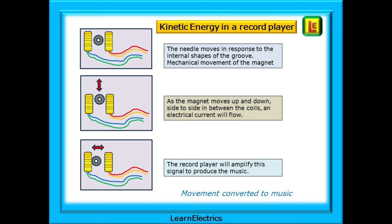The needle moves in response to the internal shapes of the groove. The lumps and bumps cause mechanical movement of the magnet. As the magnet moves up and down, side to side, in between the coils, an electrical current will flow that will mimic the frequency of the groove indentations. Bigger changes and more rapid changes in the groove shape will cause a greater current at a higher frequency. The record player will amplify this very tiny signal to reproduce the music, and we have the movement of the needle converted into sound.